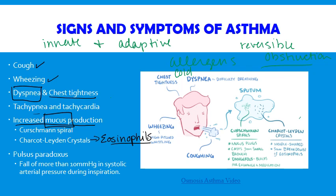Another thing we sometimes see is pulsus paradoxus — a fall of more than 10 mmHg in systolic arterial pressure during inspiration. This happens when there is lung hyperinflation that compromises left ventricle filling, occurring along with augmented venous return to the right ventricle during vigorous inspiration. Basically, we're not moving blood through the body as effectively as we should, leading to a decrease in systolic pressure during inspiration as a consequence of the decreased output.